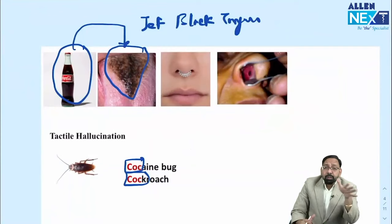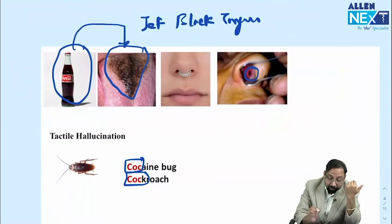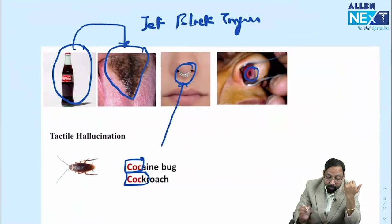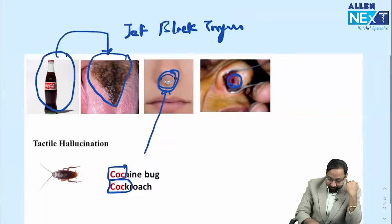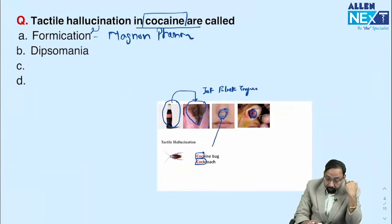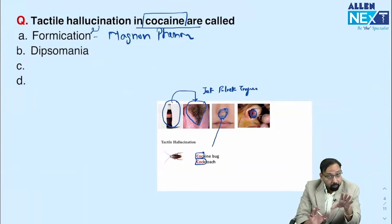If you are using cocaine frequently, there will be vasoconstriction leading to perforation of the nasal septum. The mnemonic: we wear 'coca' at different places, most frequently at the nose — nasal septal perforation. Many questions have been asked recently on cocaine. One question asked: which of the following is NOT a symptom of cocaine intoxication?